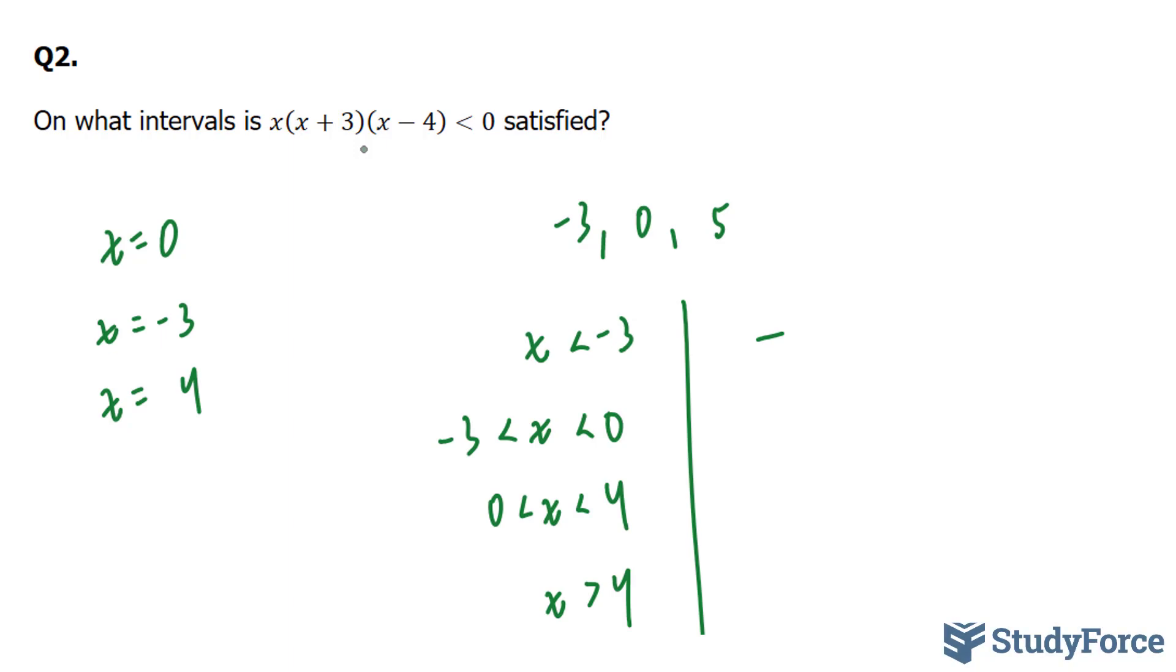Similarly, if I choose a number between -3 and 0, I get a positive, between 0 and 4, I get a negative, and anything greater than 4, I get another positive number.